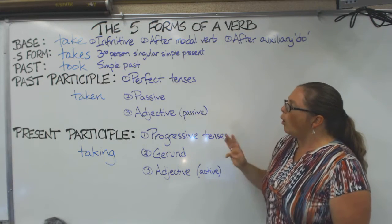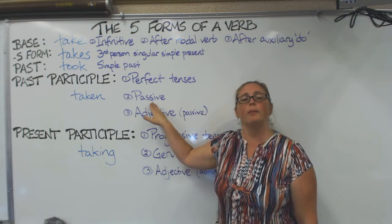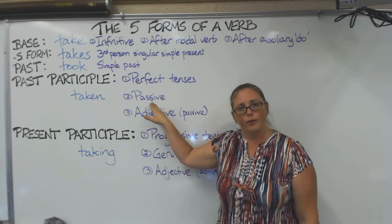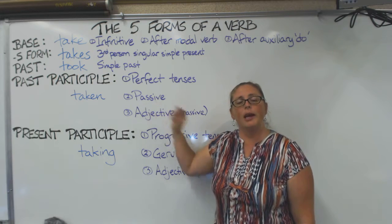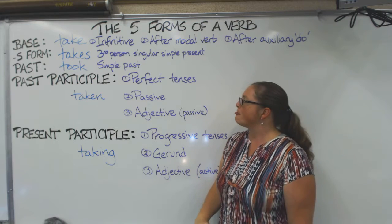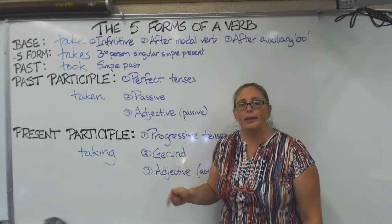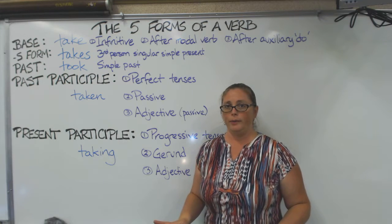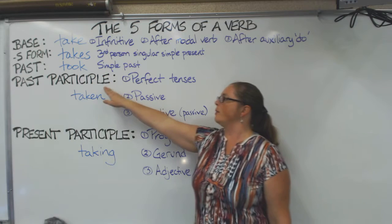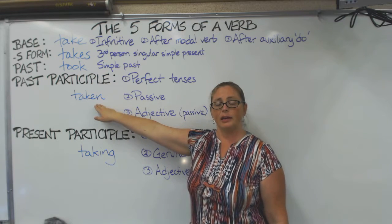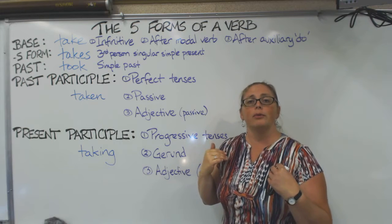You also use the past participle to form a passive verb. This one is used with the auxiliary 'be'. For example: 'The test is taken by everyone.' Using the 'be' auxiliary and the past participle 'taken' shows that the action is being received.